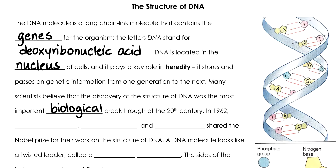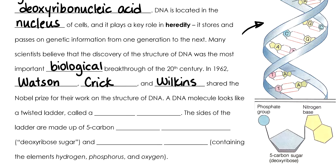We credit this discovery to scientists Watson, Crick, and Wilkins, who shared the Nobel Prize in 1962 for their work on discovering the structure of DNA. A DNA molecule is pictured here, and it has this interesting twisted ladder, spiraling staircase look to it, which we call a double helix.